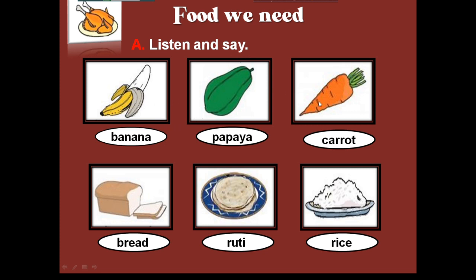দেখো এখানে কতগুলো ছবি আছে। যে খাবারগুলো ছবিতে আছে সেগুলো আমরা বুঝতে পারি। দেখো এটা - carrot, গাজর। এটা bread, পাউরুটি। Next দেখো এটা roti, রুটি। এরপর rice, ধান, চাল, ভাত।